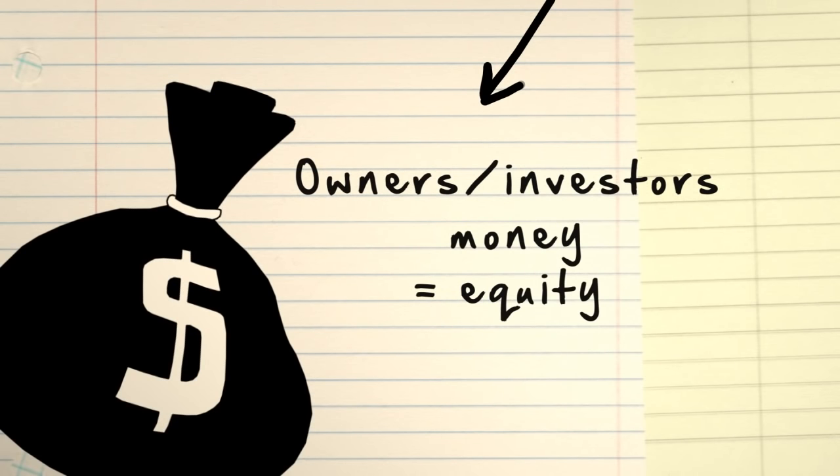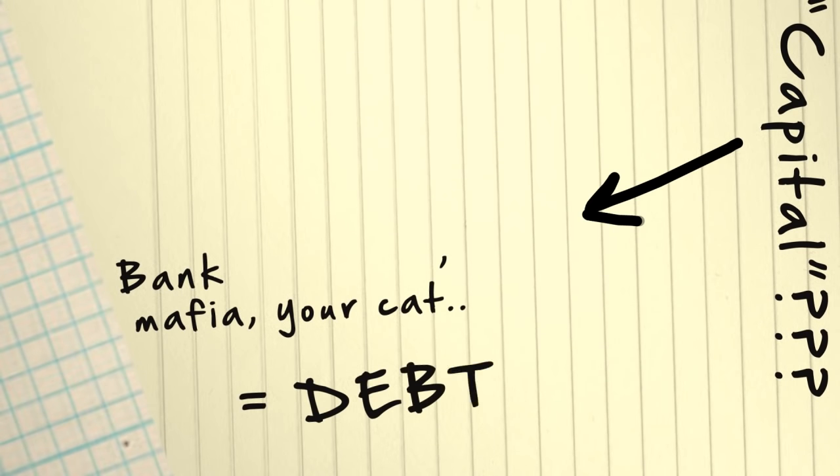You get it from either the owner's money, called equity, or you get it from borrowing from the bank or other sources, called debt.